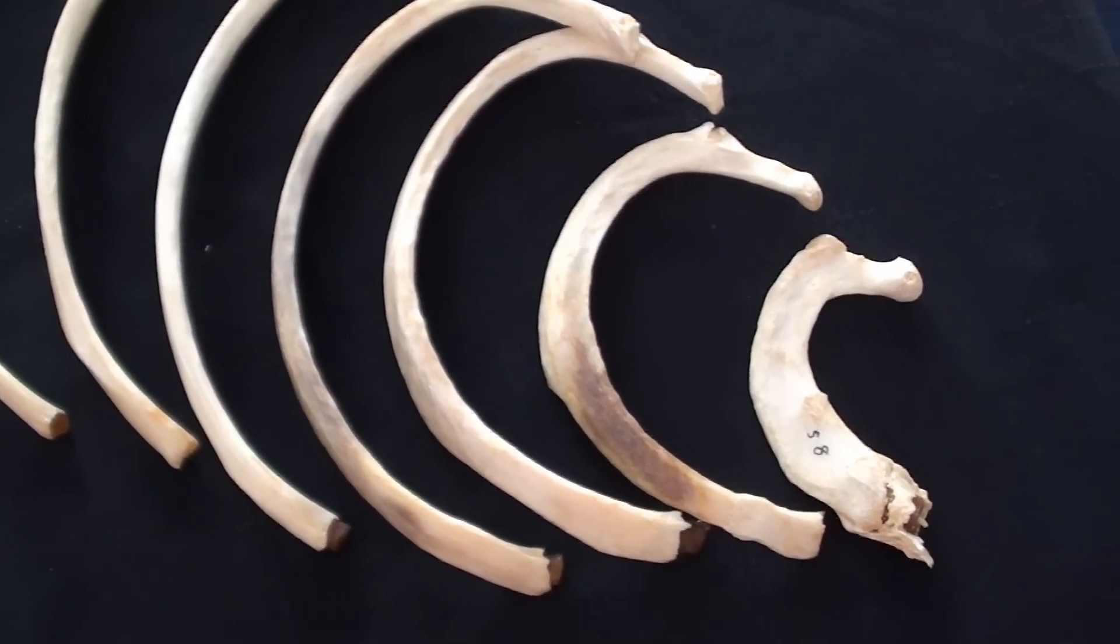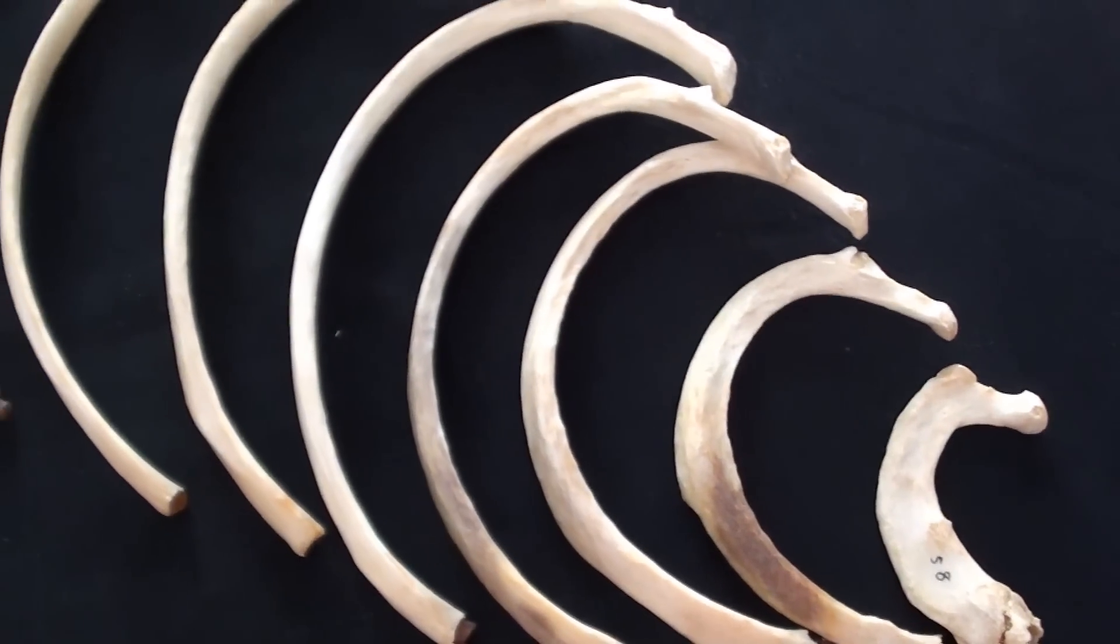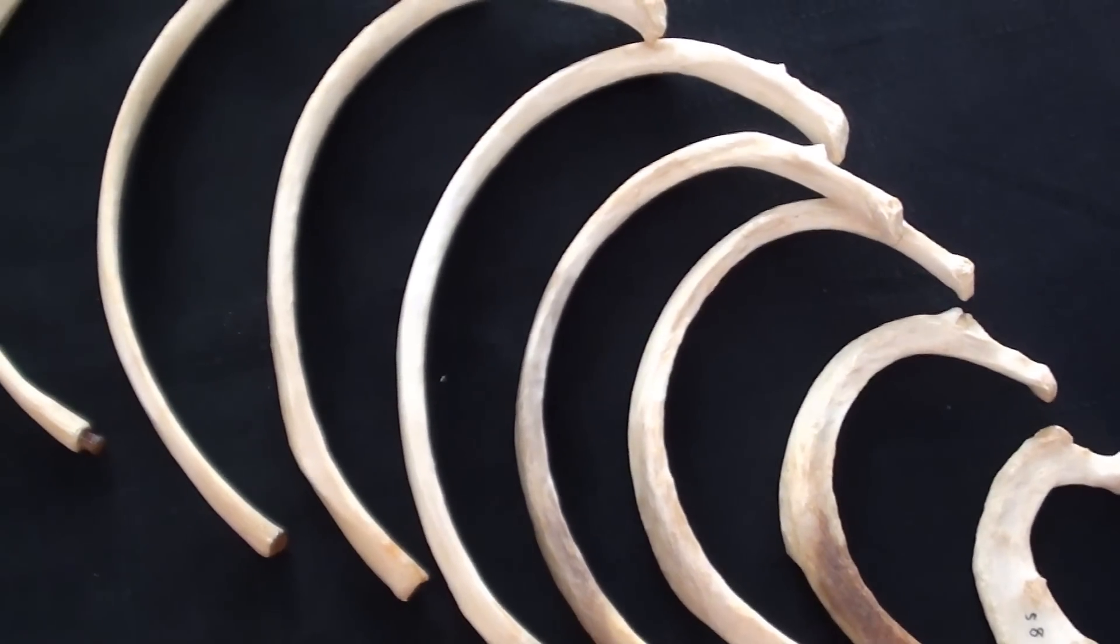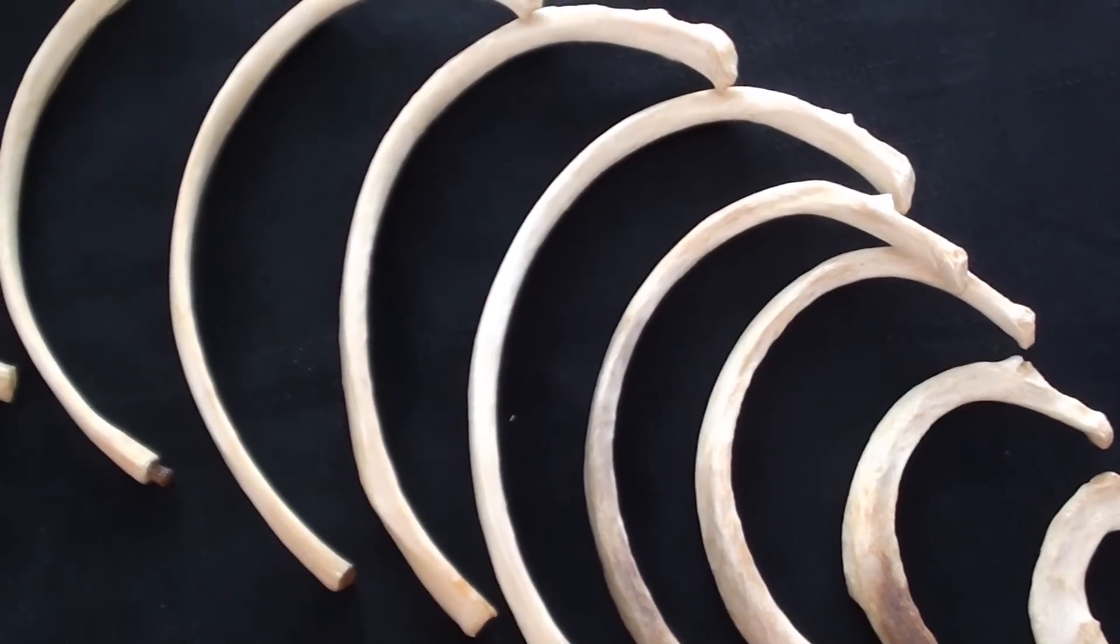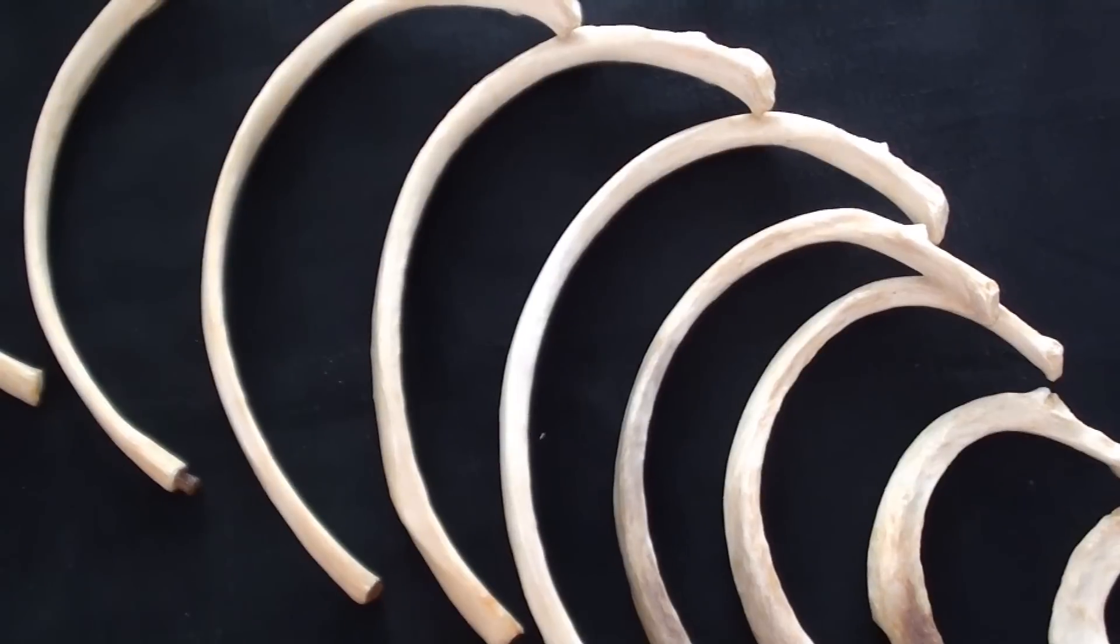they are ranged from very small rib number one, and then the length of the rib is progressively getting bigger and longer. So we typically say that rib number seven is the longest rib.